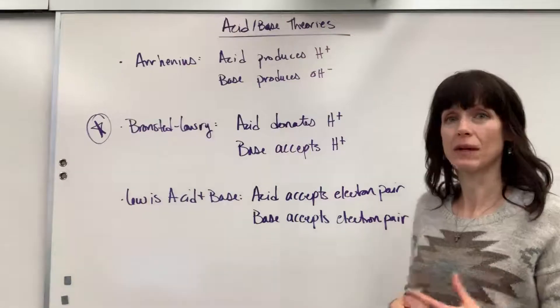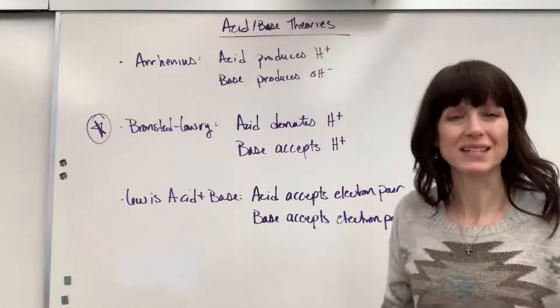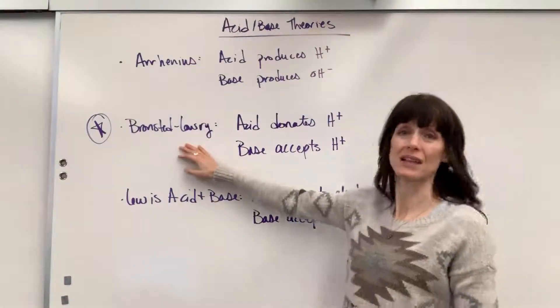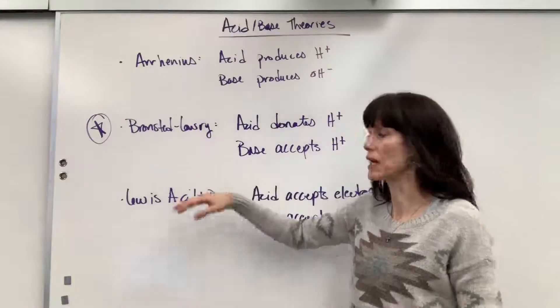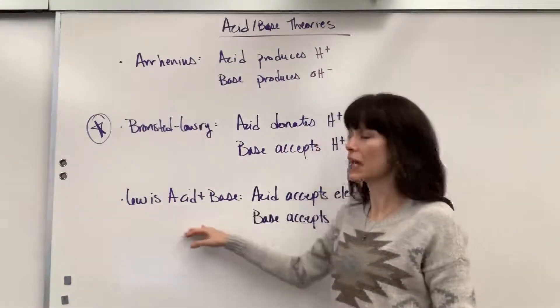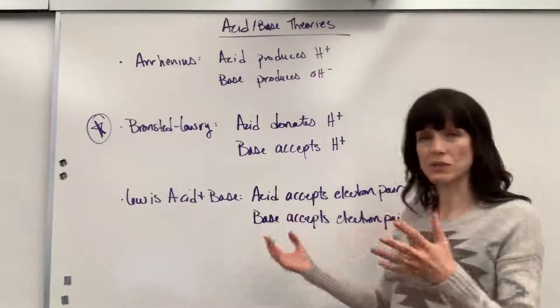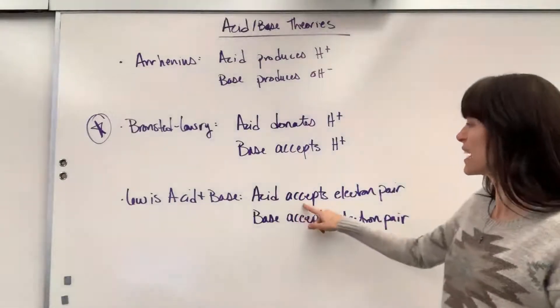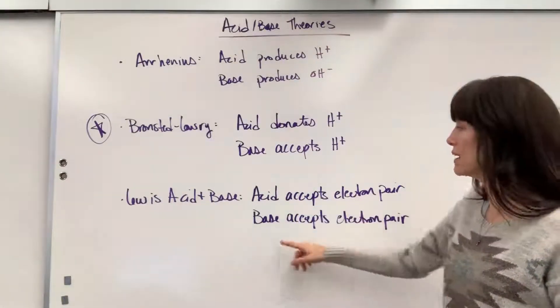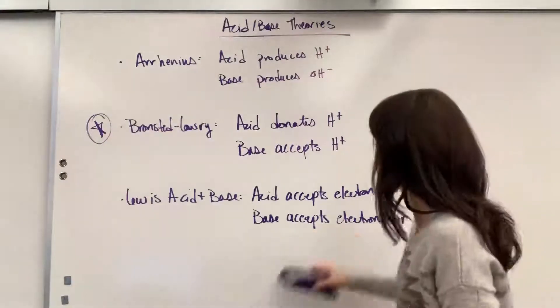Last thing that I do want you to make aware of, we have some more complex acids and bases that even the Bronsted Lowry was too simplistic to explain. And so Lewis is the one that came up with this idea, Lewis acids and bases. An acid accepts an electron pair and a base donates.